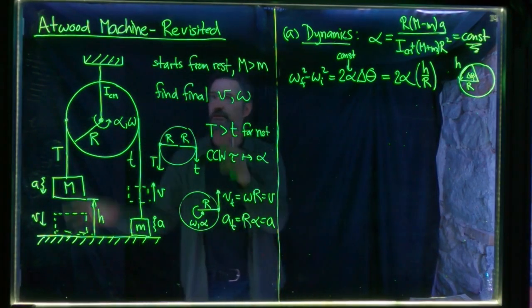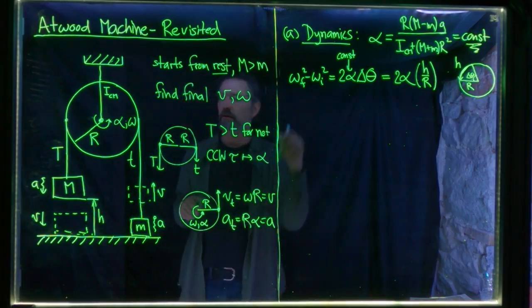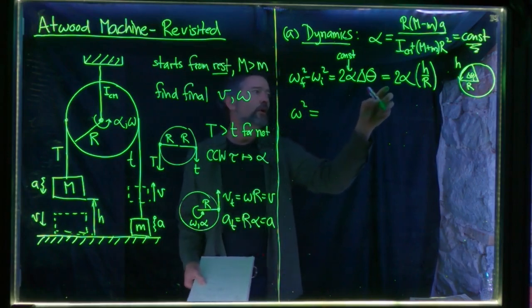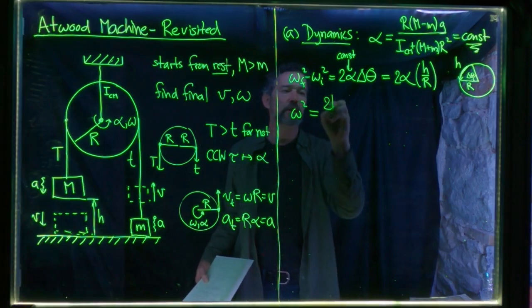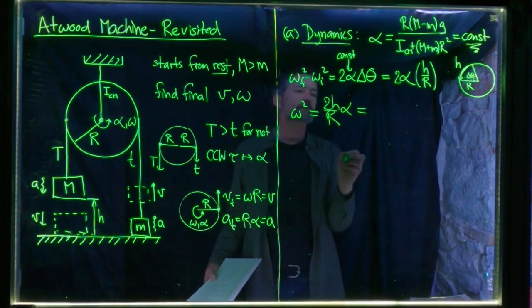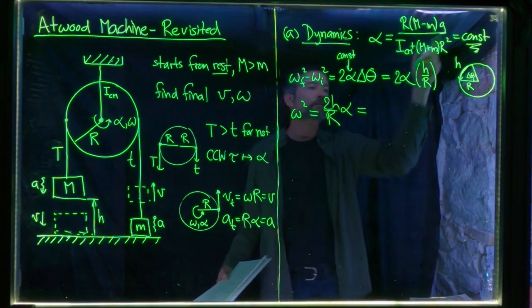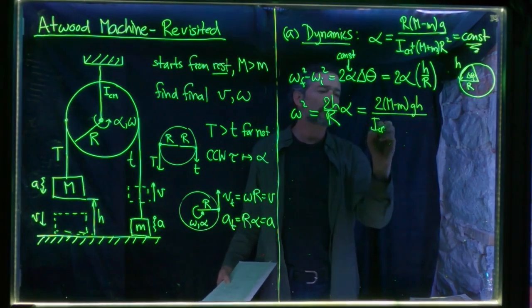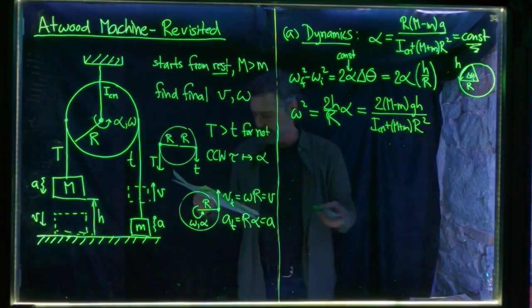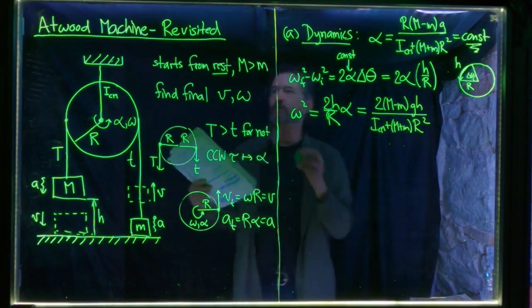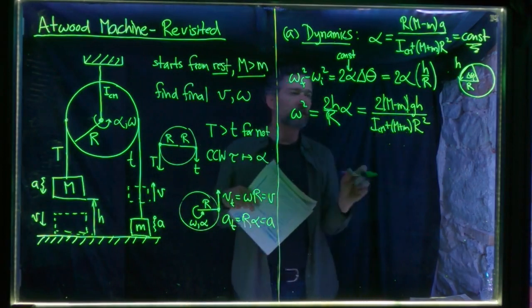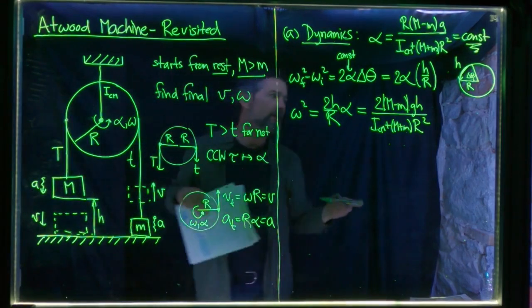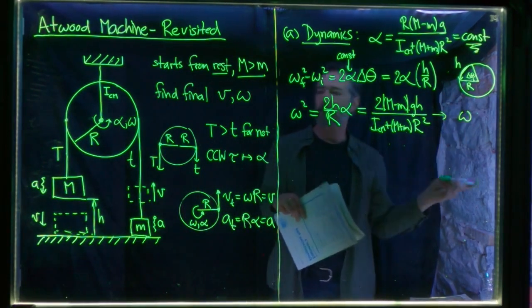In the kinematic formula, omega initial is zero (we start from rest), and we're looking for omega final. So omega final squared equals 2 times (H/R) times alpha. Substituting and simplifying — dividing by R cancels one R, multiplying by 2H — we get: omega squared equals 2 times (big M minus little m) times G times H, divided by (ICM plus the sum of the masses times R squared). We assume big M is bigger, so this is effectively an absolute value. Then we take the square root to get omega.